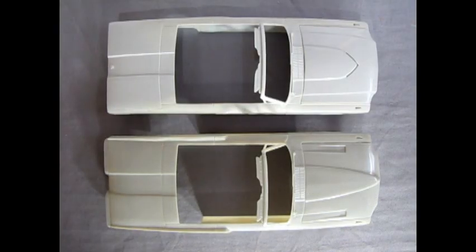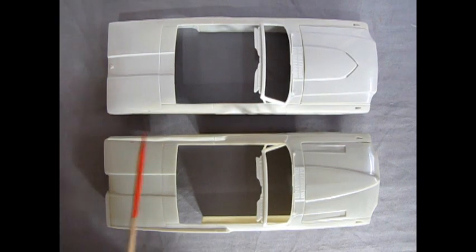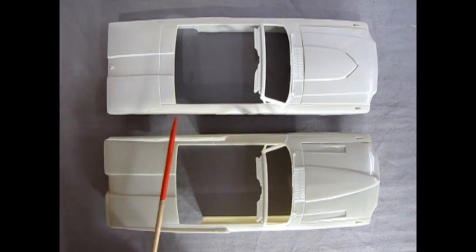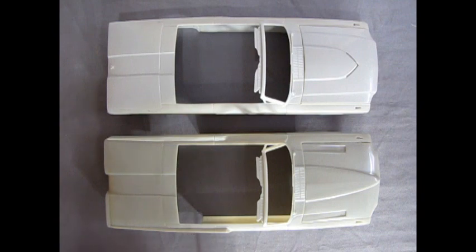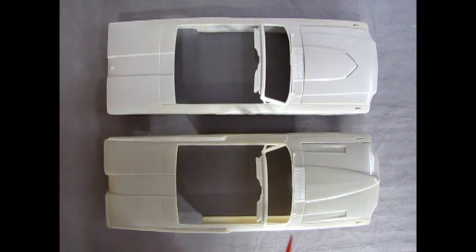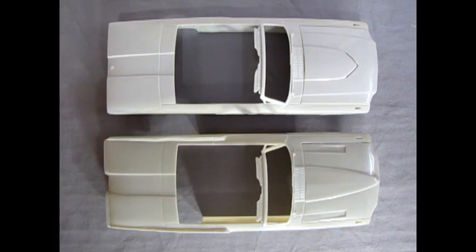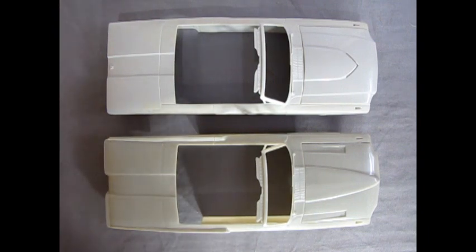So now we're going to take a look at the two bodies side by side. Now keep in mind that I'm building one of these as a stock 1966 Thunderbird, and this one has the custom George Barris, Alexander Brothers type of Thunderbird for the era. Now this one has a lot of customizing features that were on there and a lot of cues of the mid to late 60s customizing features.